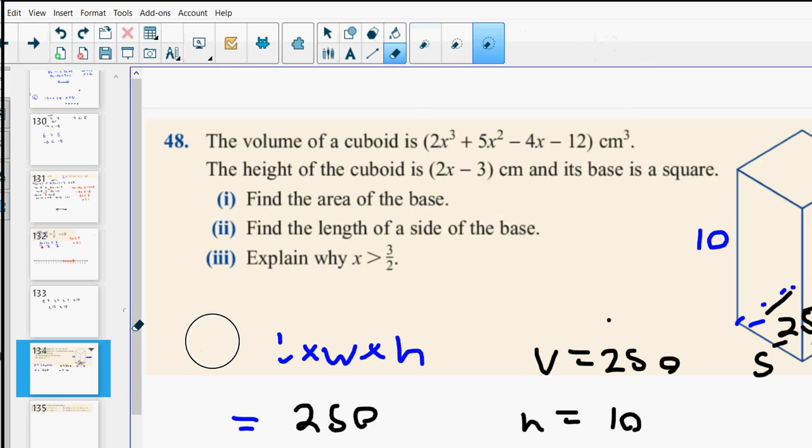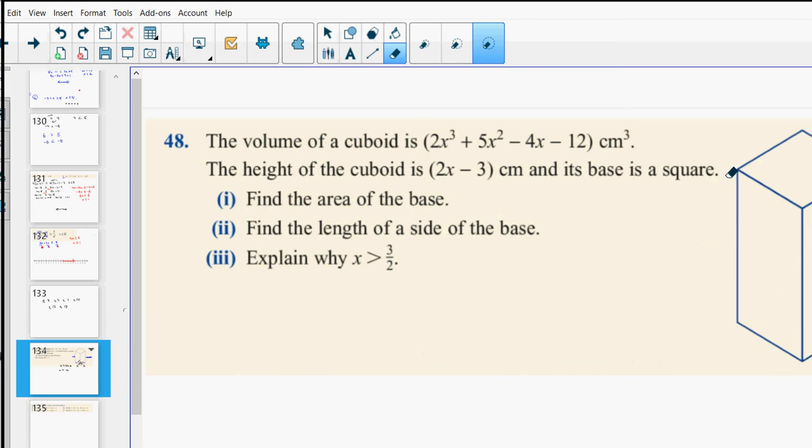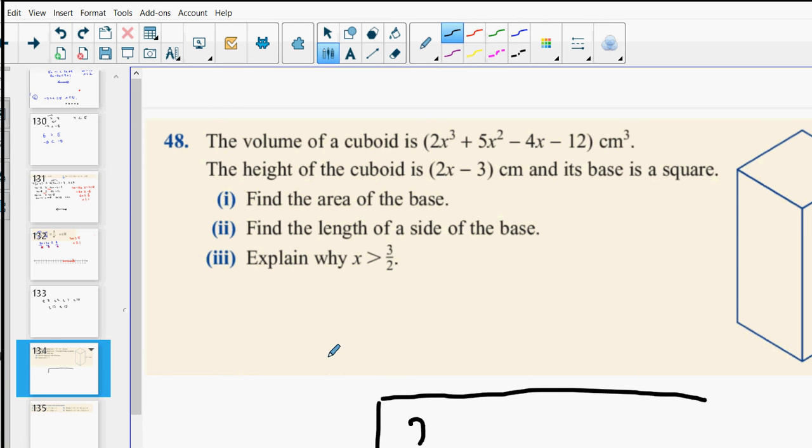Now, here's what we're going to do. This question is in the long division chapter. So it's safe to say we're going to do long division to solve it. Everybody cool with that? So mostly, we've probably got this part out. So we've got 2x cubed plus 5x squared minus 4x minus 12. And we've got the 2x minus 3 over here.